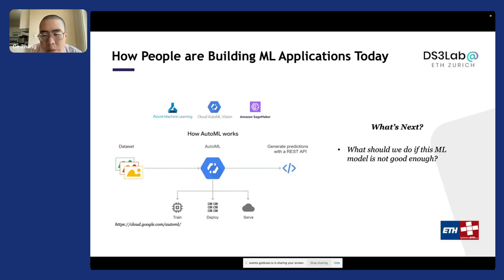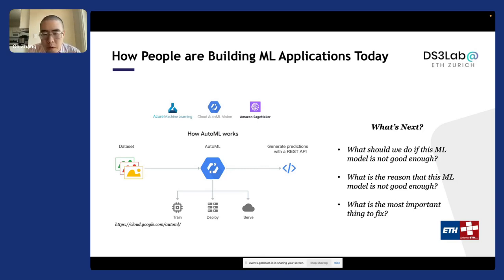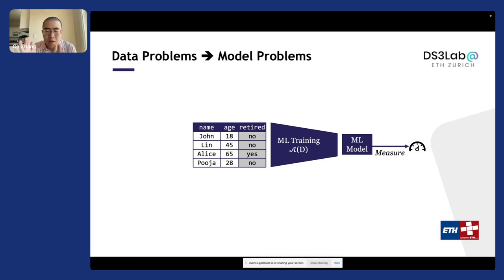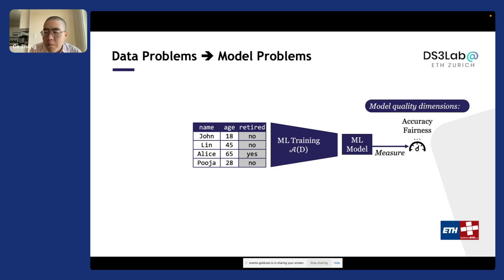But what's next? What if this model is not good enough? What is the reason the model is not good enough? And if you need to fix something in the model or in the data, what is the most important piece to focus on? These questions become challenging because building machine learning applications in the real world never looks like the textbook picture where you pipe your training data into a training process, get a model, measure quality, and get some utility — maybe accuracy, maybe fairness. It's never that simple.